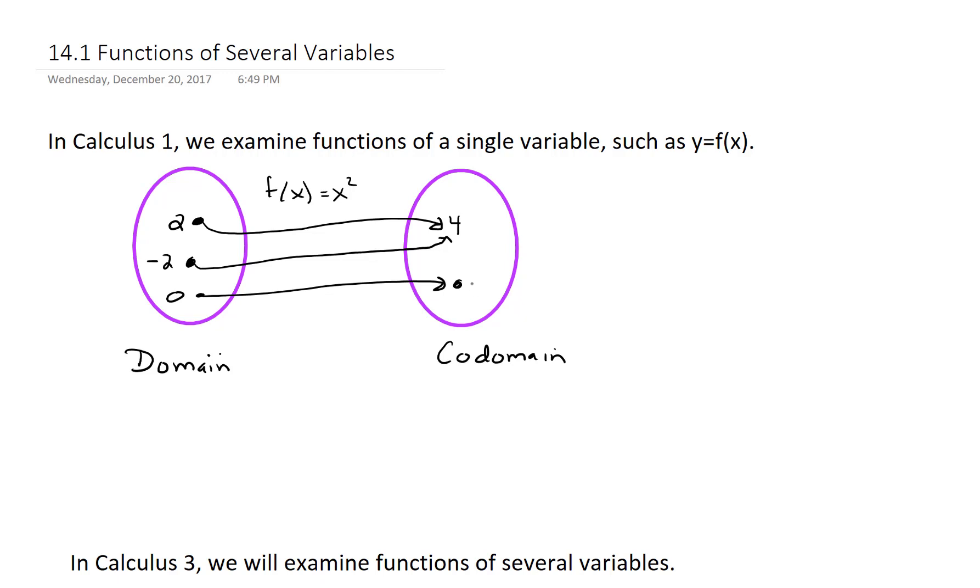And if we were to plot that, we've got our x and y axis, these functions look like some sort of curvy line. In this case it looks like a parabola. And that's pretty much Calculus 1. We do all sorts of things in here. We do derivatives, we do integrals, area under a curve, and things like that.